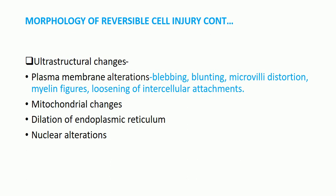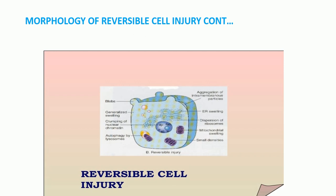For reversible cell injury, you will also see ultrastructural changes. In plasma membrane alterations you will see blebbing, blunting, microvilli distortion, myelin figures, and loosening of intercellular attachments. You will also see mitochondrial changes, dilation of the endoplasmic reticulum, and nuclear alterations. As shown in this diagram, you can see blebbing of the membrane, swelling of the endoplasmic reticulum, mitochondrial swelling, and cramping of nuclear chromatin. These all manifest reversible cell injury.